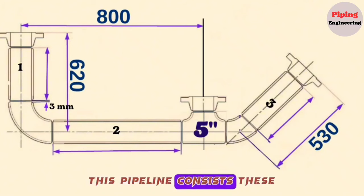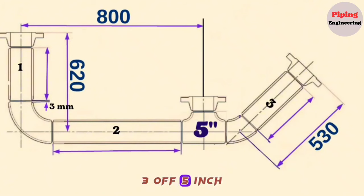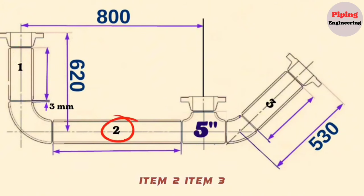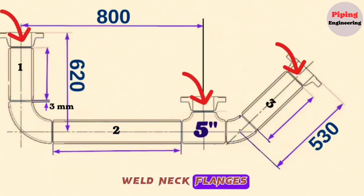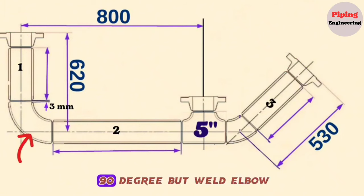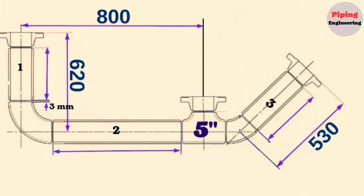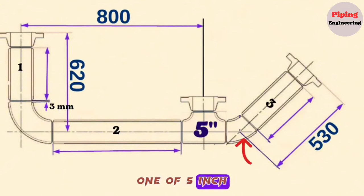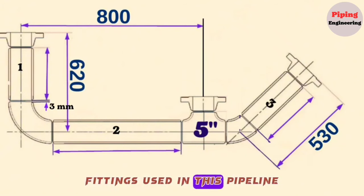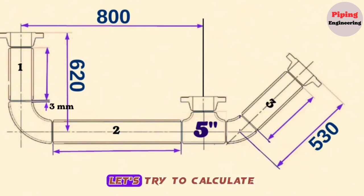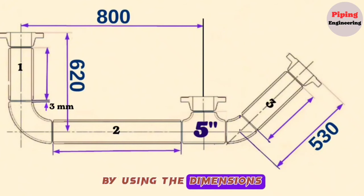This pipeline consists of: 3 off 5-inch pipe pieces (Items 1, 2, 3); 3 off 5-inch weld neck flanges; 1 off 5-inch 90-degree butt-weld elbow; 1 piece 5-inch equal pipe tee; and 1 off 5-inch 45-degree butt-weld elbow. We can find fitting dimensions from their dimension charts.